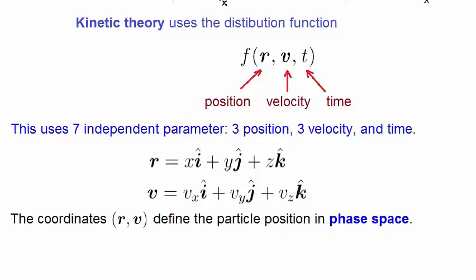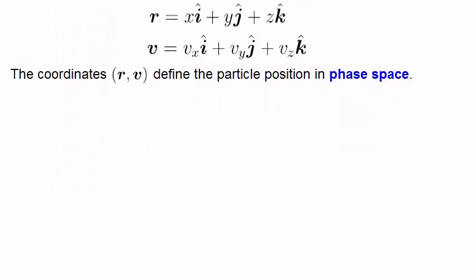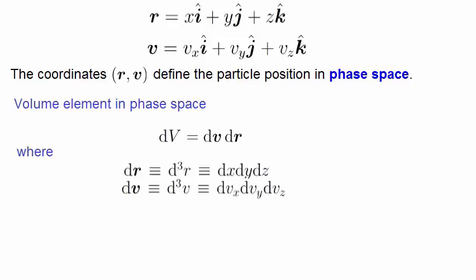It is a six-dimensional space. So when we write a volume element in phase space, dV, then it's equal to dv dr. Where, in shorthand, dr can also be written d cubed r, which is dx dy dz. And dv, similarly, can be written as d cubed v, as dvx dvy dvz. So when we write a volume element, dv dr, we mean this. Keep in mind that this really is a six-dimensional space.